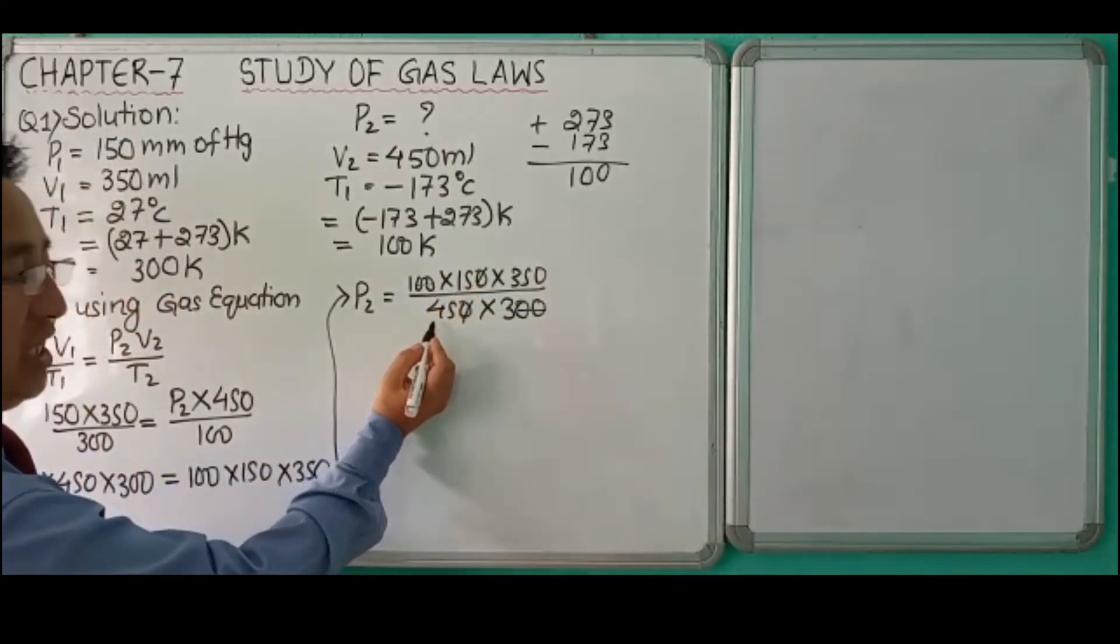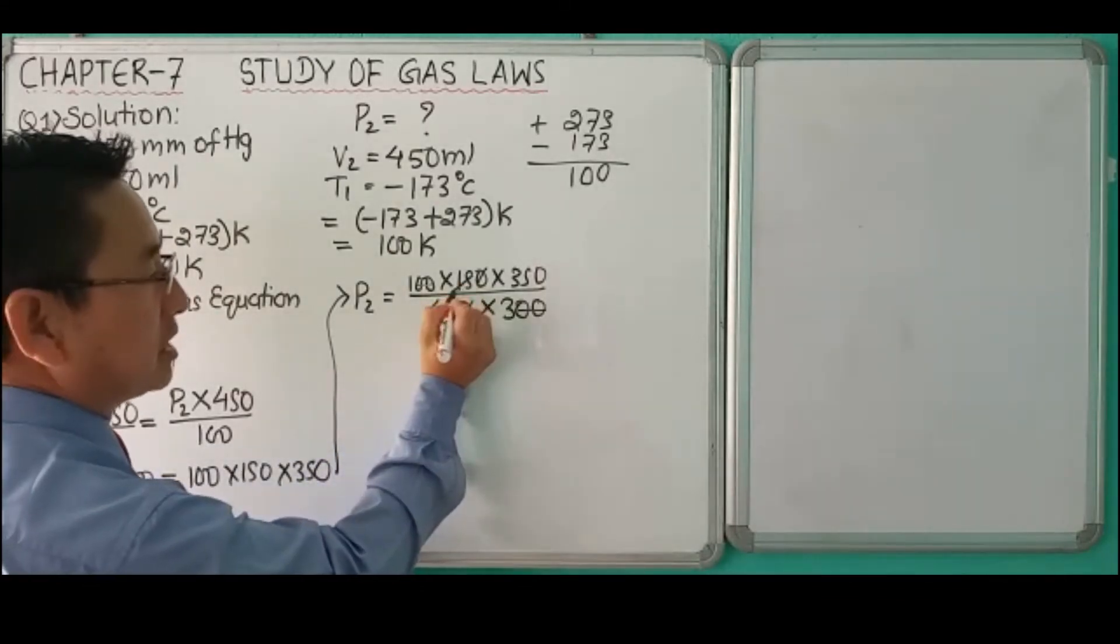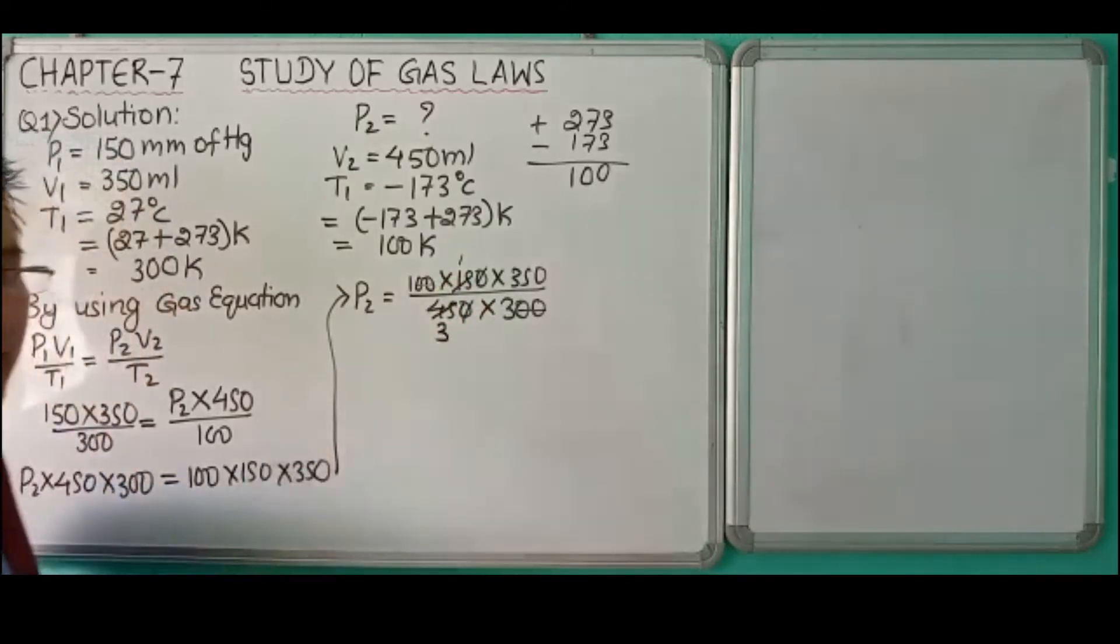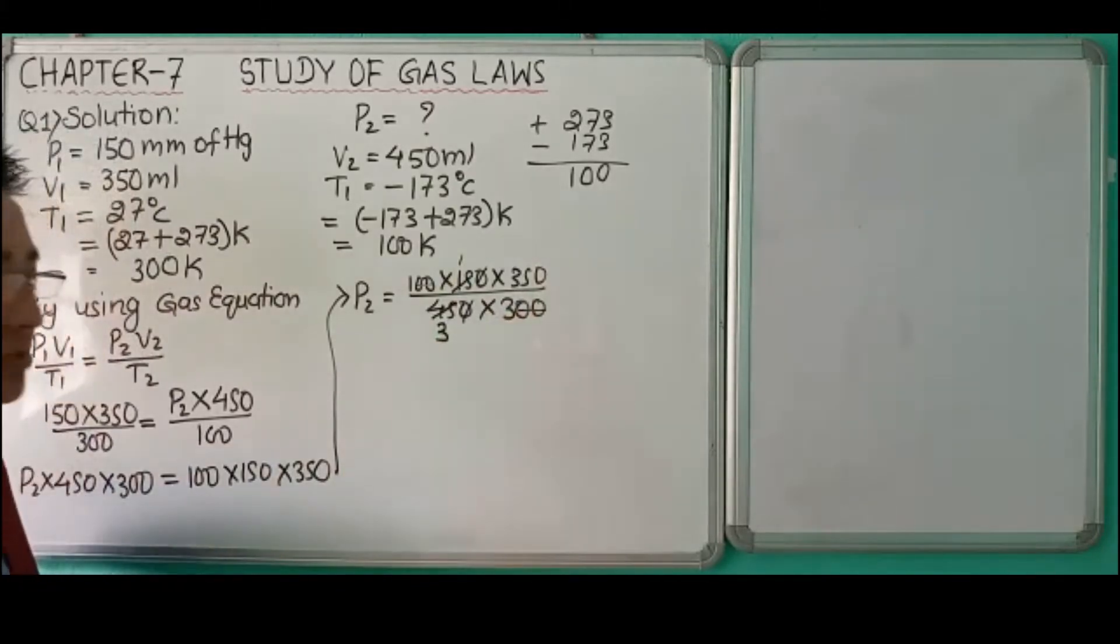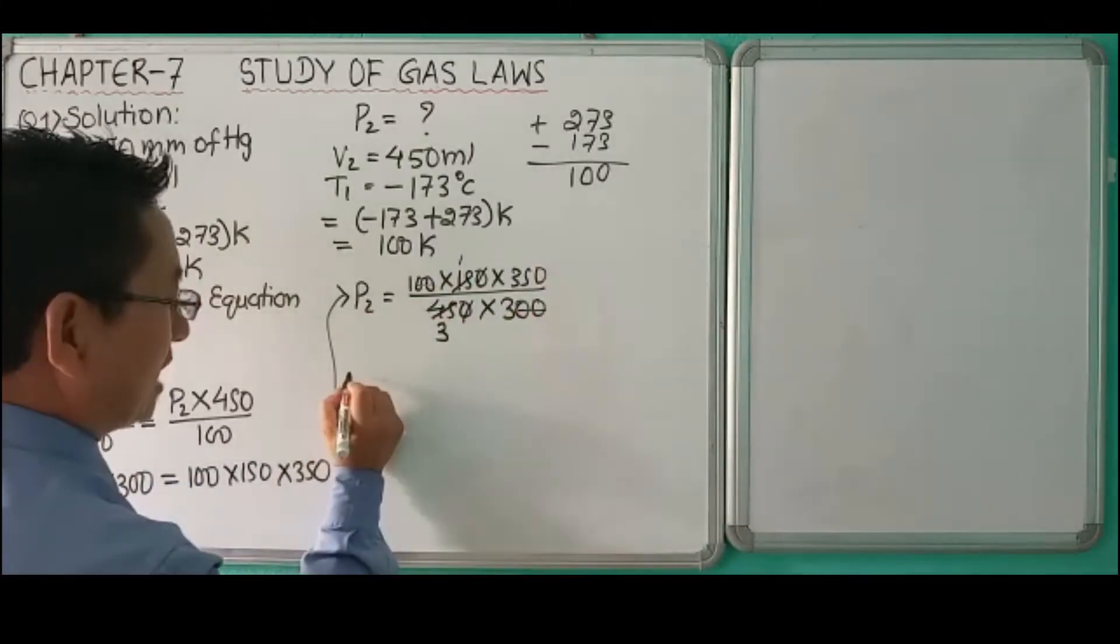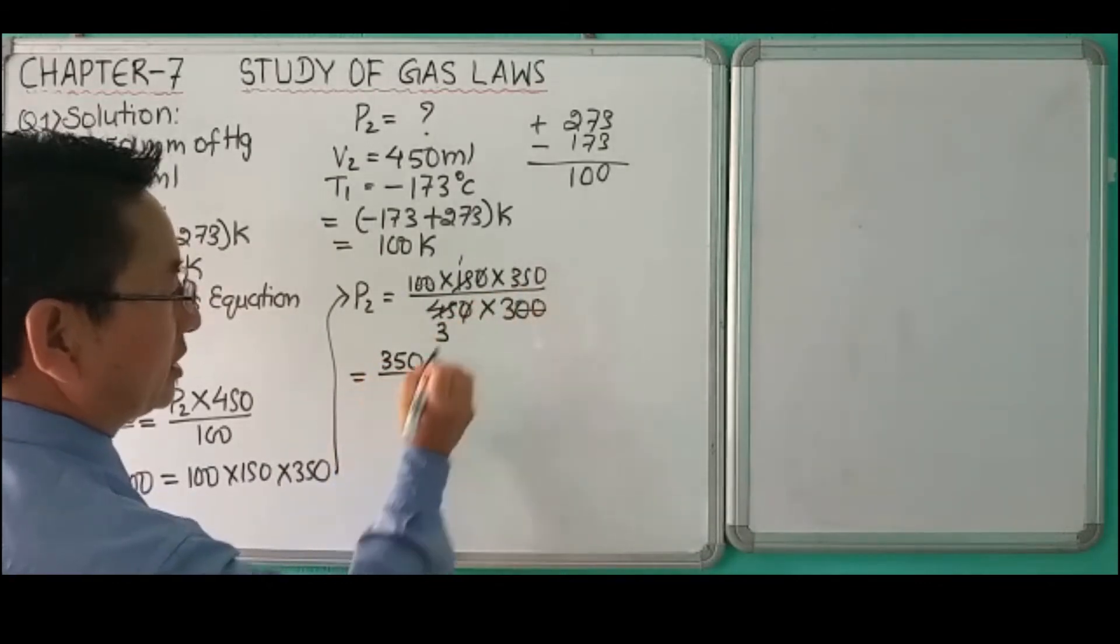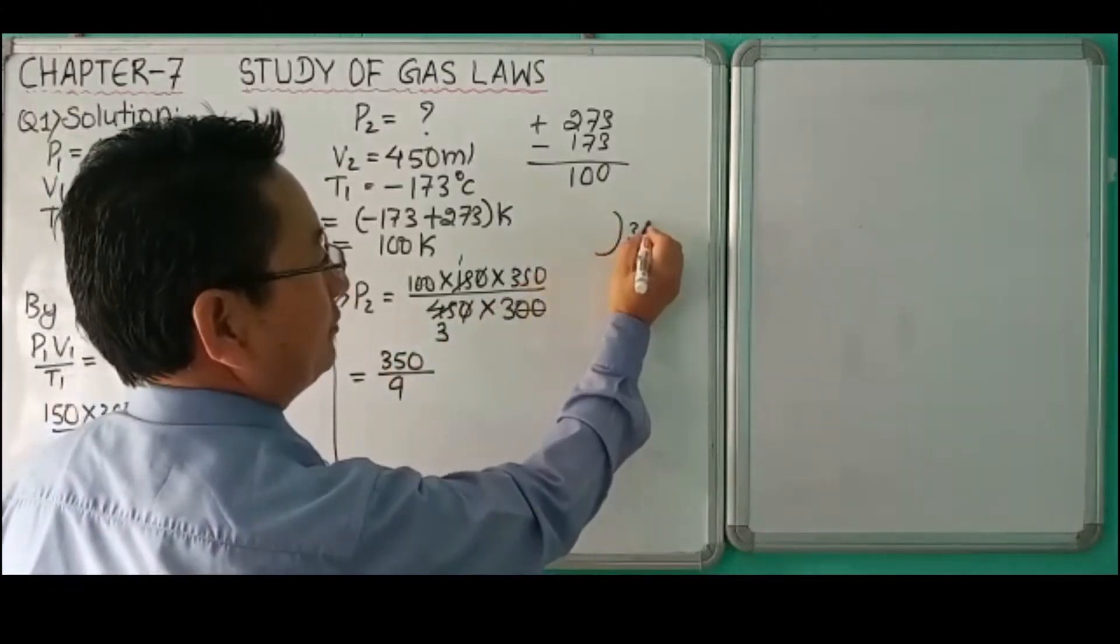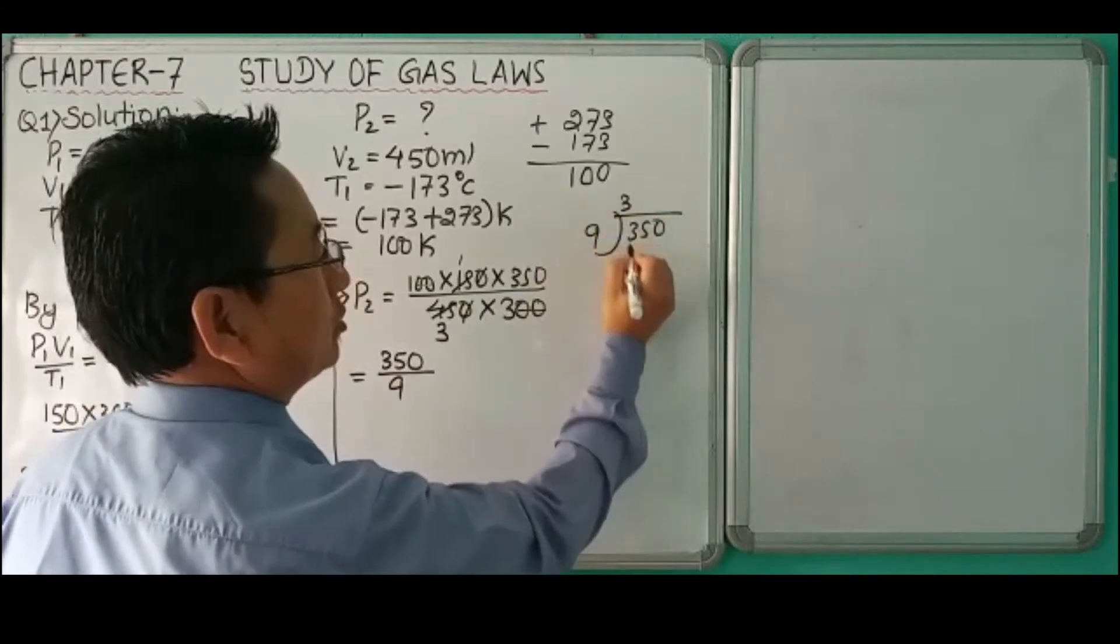This 100 and these zeros cancel. 15 and 45 can be cancelled. 350 over 3, we cannot cancel these further, so we'll divide 350 by 9.